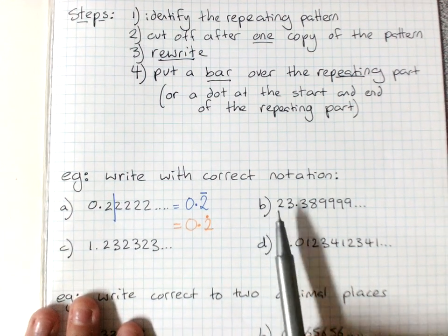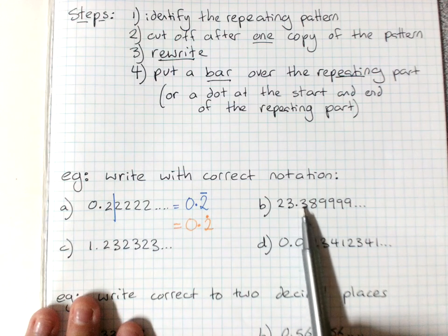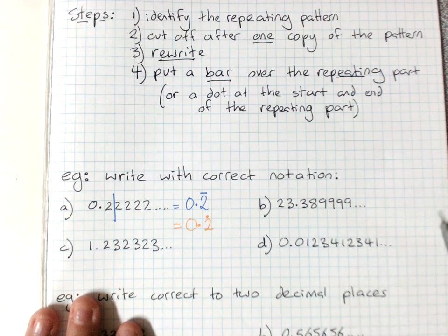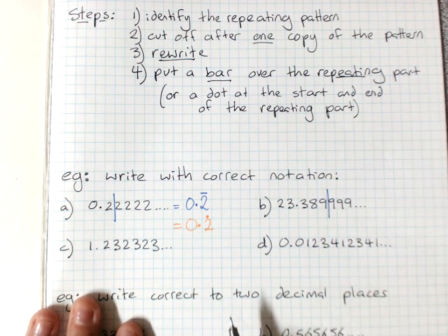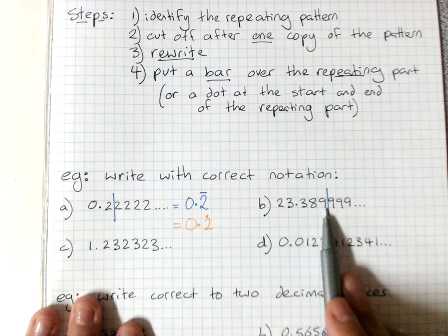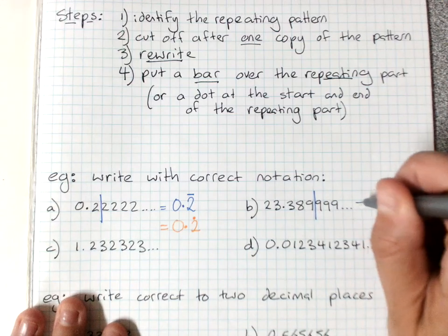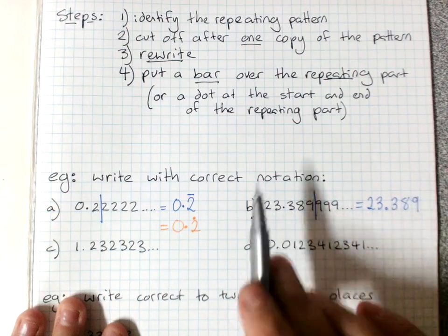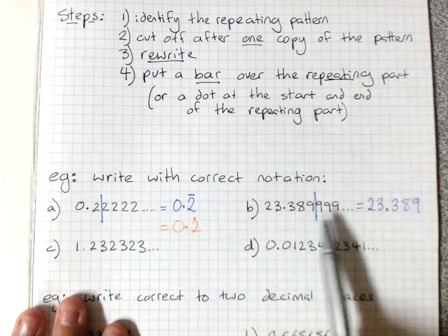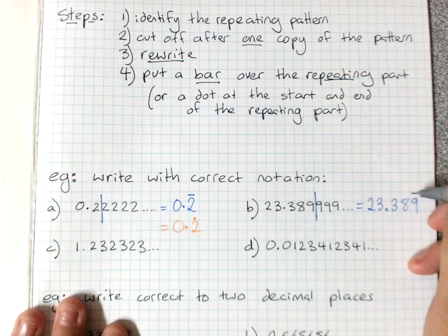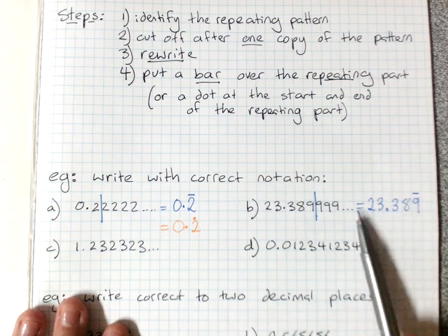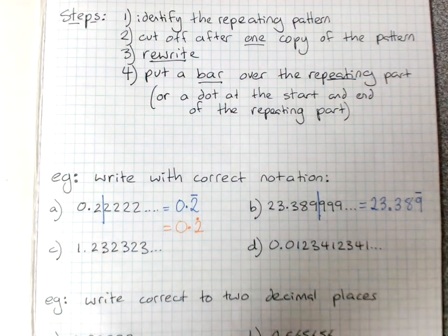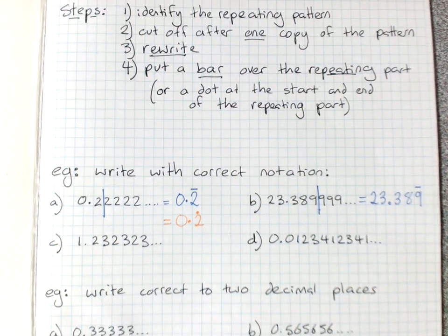Question B, identify the repeating pattern. Now, not all of this repeats. Here's the repeating pattern starting, and the only thing that's repeating is a 9. So we cut it off after one copy of the repeating pattern, that is, after one lot of 9. We write everything up until we cut off: 23.389. And we put a bar over the repeating part, and the only repeating part is the 9. So that says my decimal is 23.389, and the 9 then keeps going forever.